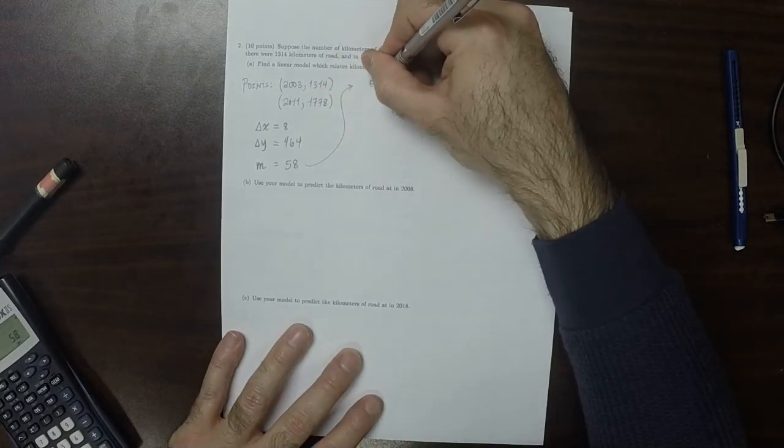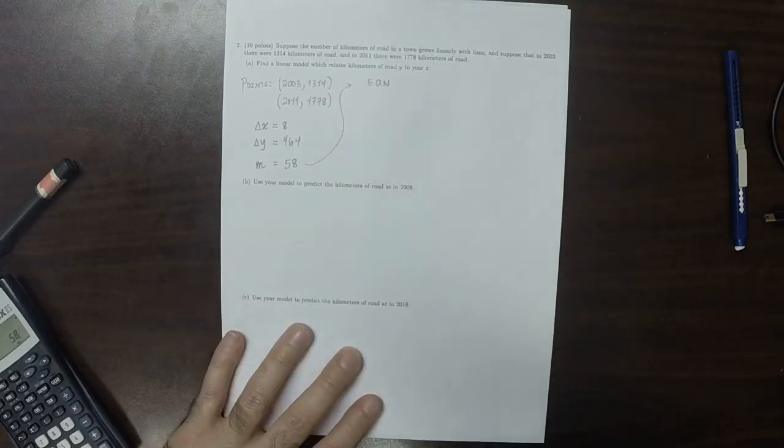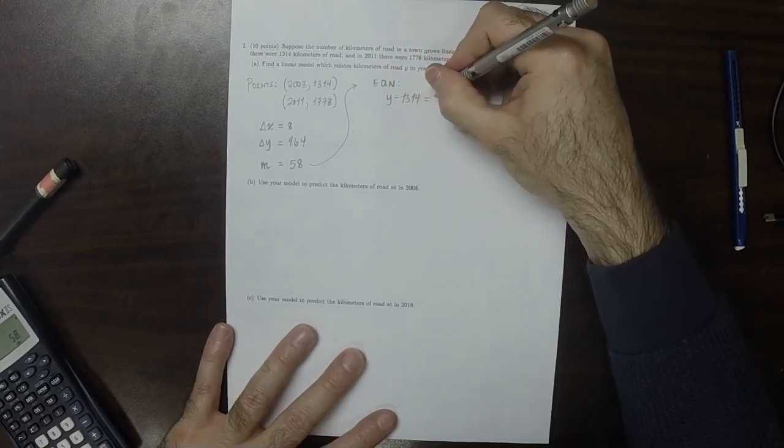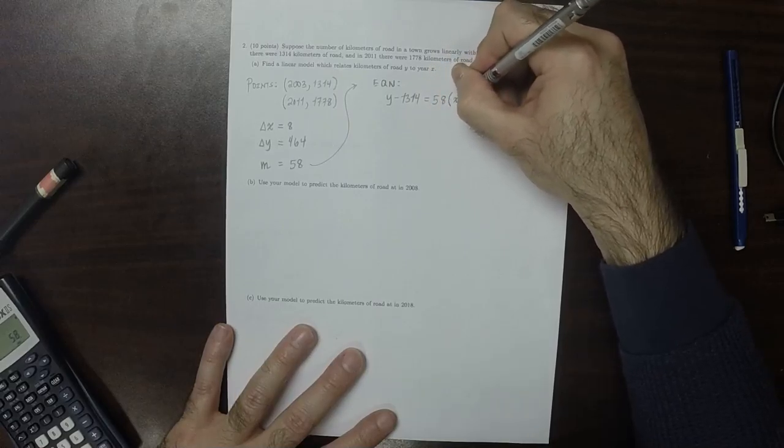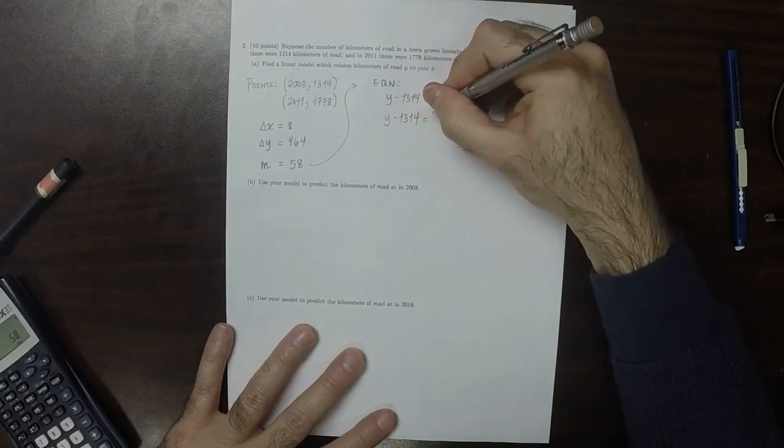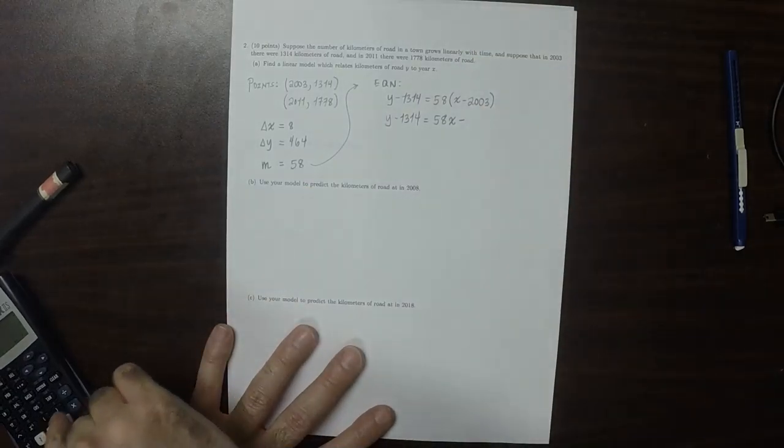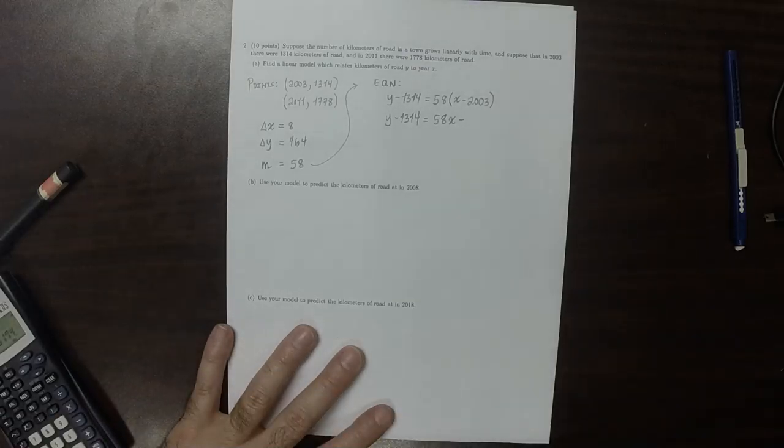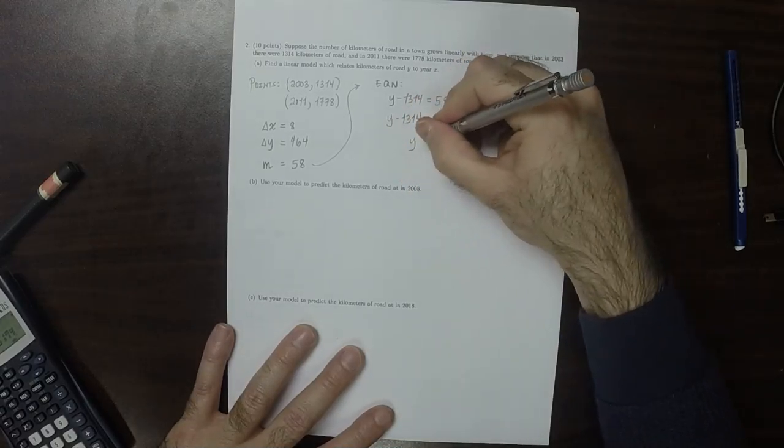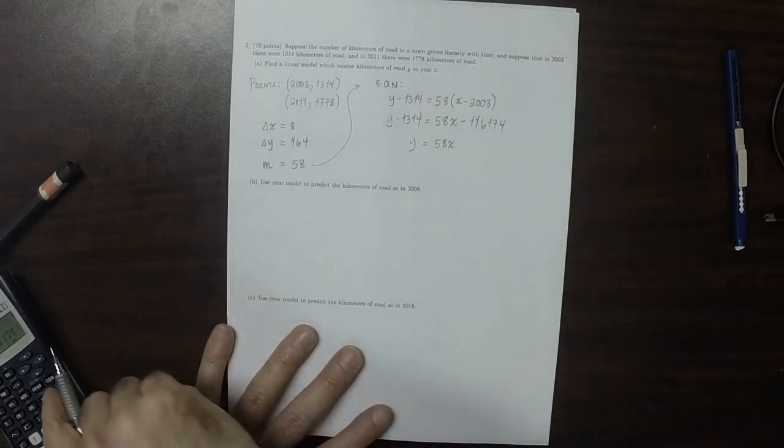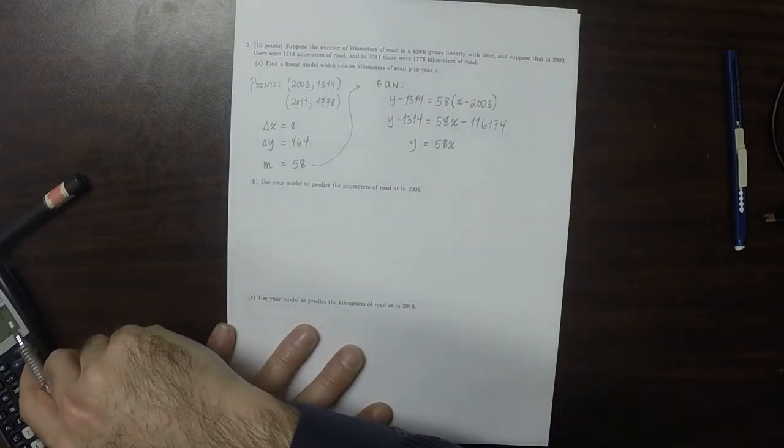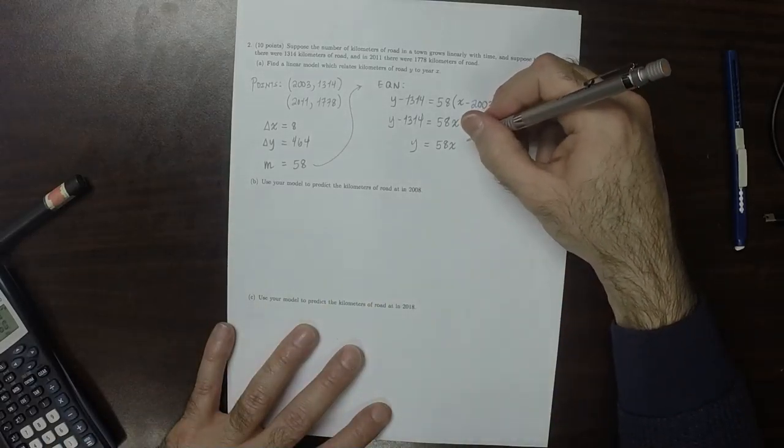So as for the equation, we can use this slope and either one of those two points. So I'll use the one with slightly smaller numbers. So y minus 1,314 is 58 multiplied by x minus 2,003. So y minus 1,314 is 58x minus 116,174. And then solving for y, y is 58x minus 114,860.